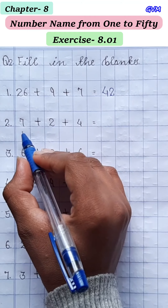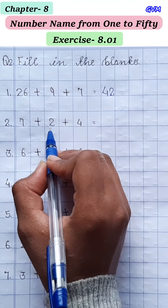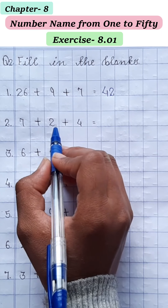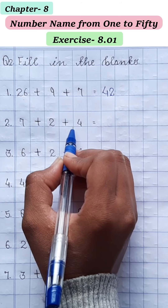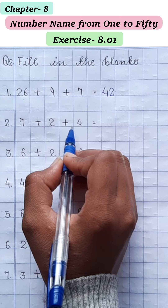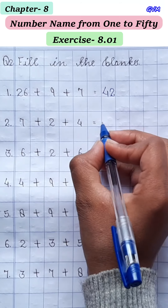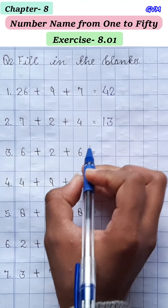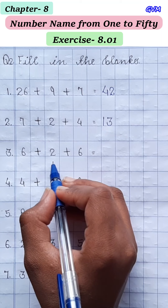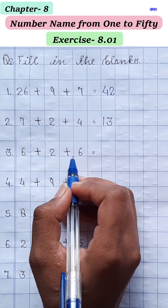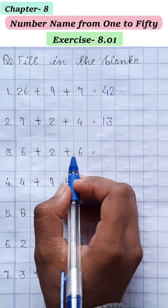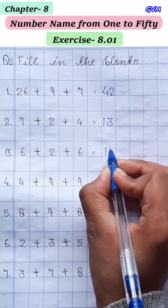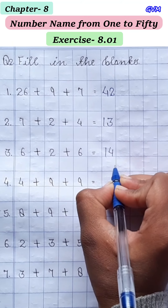इसी तरह से next करेंगे। 7 plus 2: 7 के आगे 2 count करेंगे — 8, 9। 9 plus 4: 9 के बाद 10, 11, 12, 13। तो यहाँ पर 13 आगे है। 6 plus 2 = 8। 8 plus 6: 8 के आगे count करेंगे — 9, 10, 11, 12, 13, 14। यहाँ पर 14 आगे है।